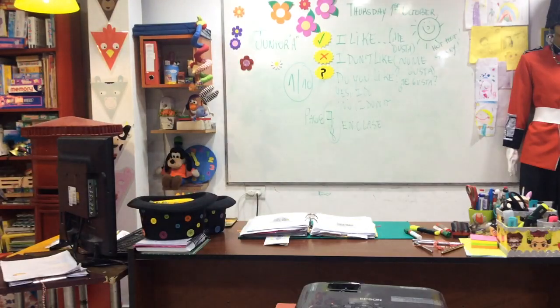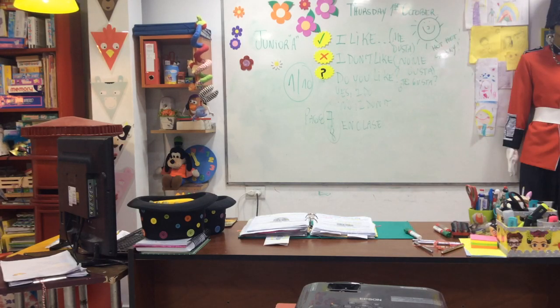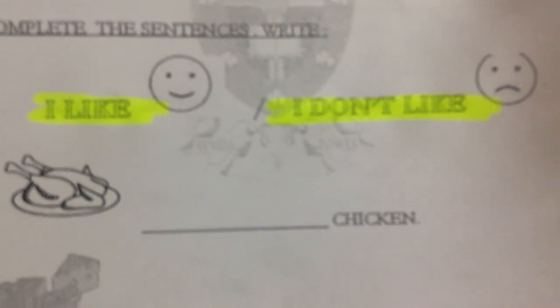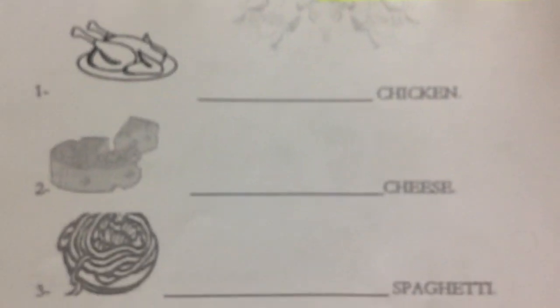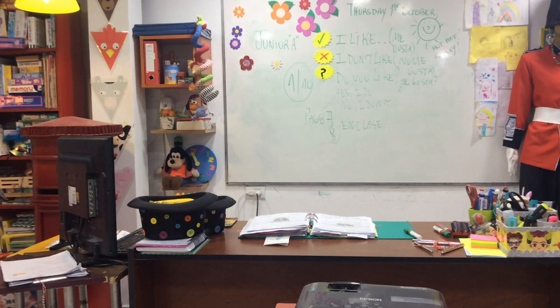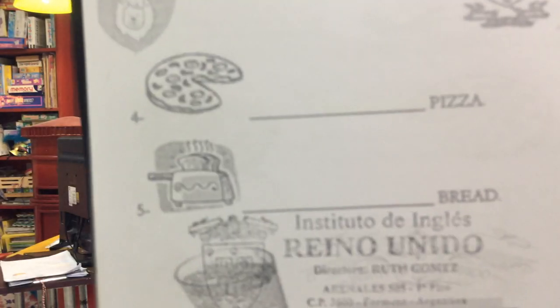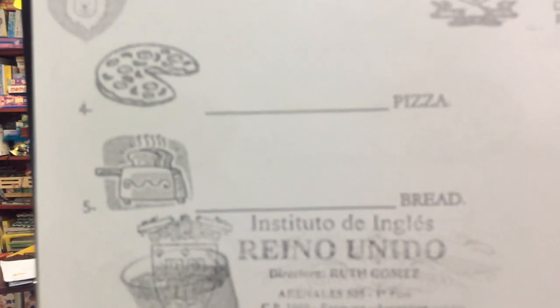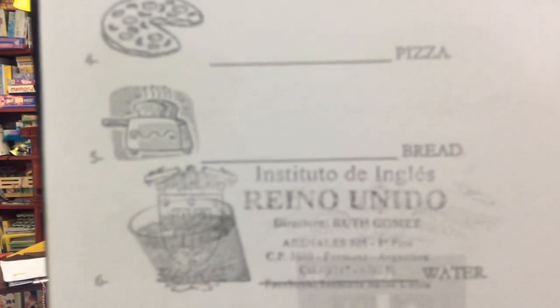Now the exercise below — write 'I like' or 'I don't like.' Let's mark the key word. 'I like' or 'I don't like.' Chicken — I like chicken. You put whether I like or I don't like. Cheese — I don't like cheese. Spaghetti — I like spaghetti or I don't like, depending on whether you like it. Page 8: I like pizza or I don't like pizza. I like bread or I don't like bread. I like water or I don't like water.